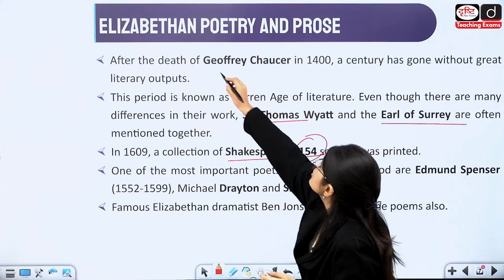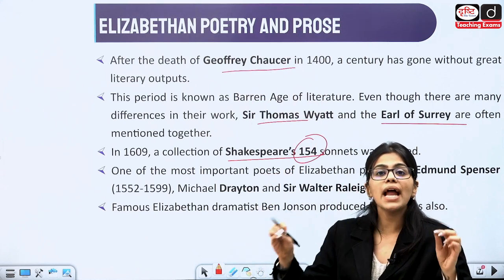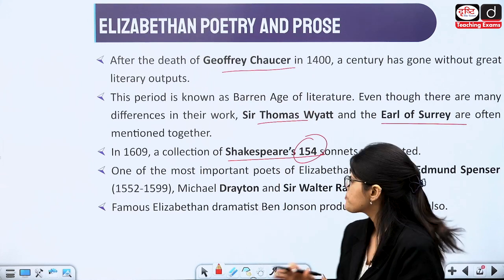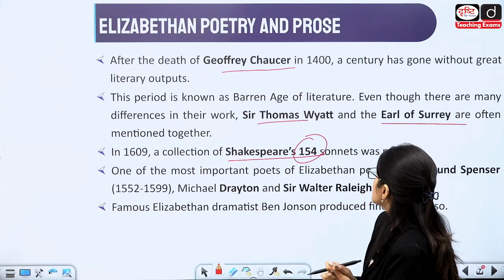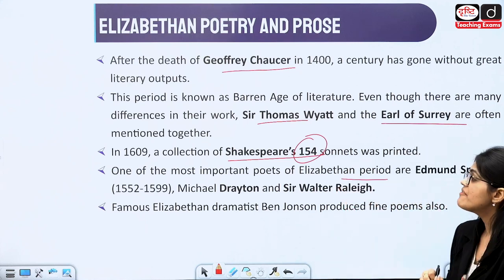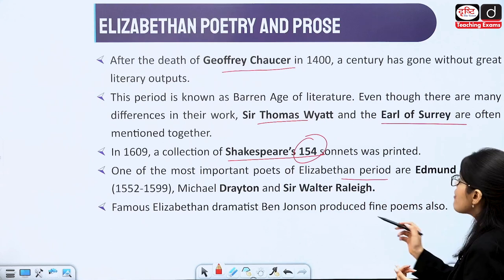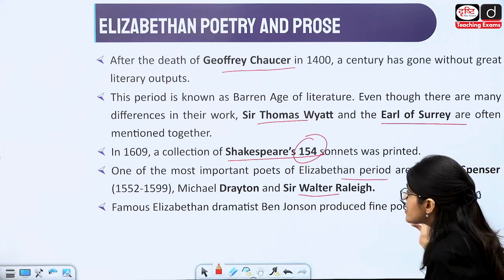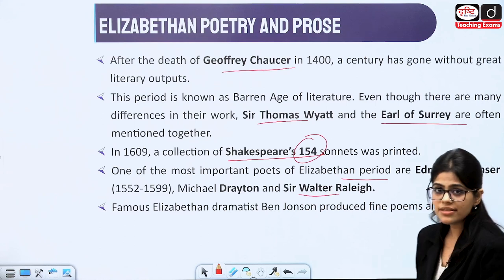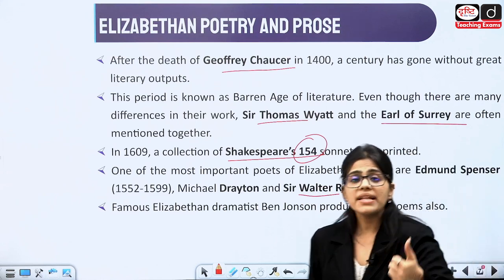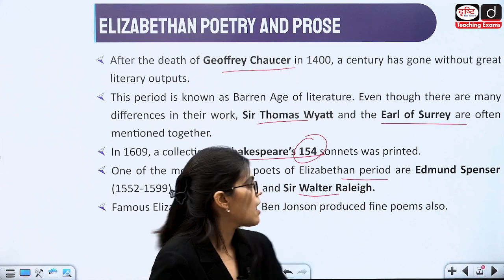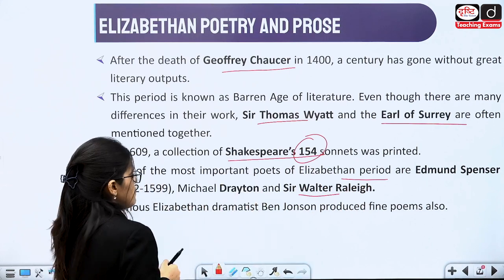After Chaucer, it is Shakespeare whose name gave an entire age — it was called the Age of Shakespeare. There are other important writers in the Elizabethan period too: Edmund Spenser, Walter Raleigh, Michael Drayton, and many others. Spenser and Sidney will be specially focused on because questions are asked from these people.